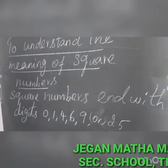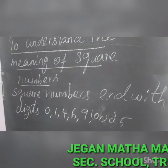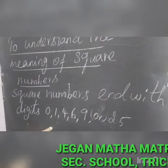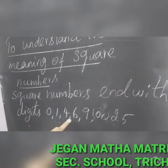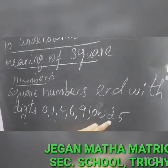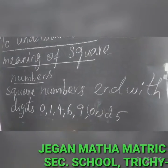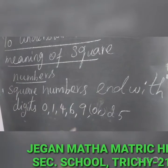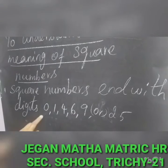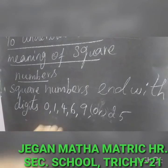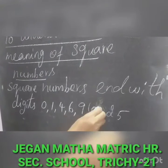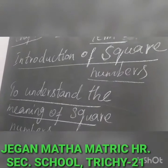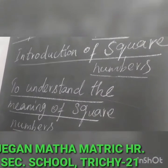What are square numbers? Square numbers end with the digits 0, 1, 4, 6, 9, or 25. These are the ending digits. This is the first main point: square numbers end with the digits 0, 1, 4, 6, 9, or 25.